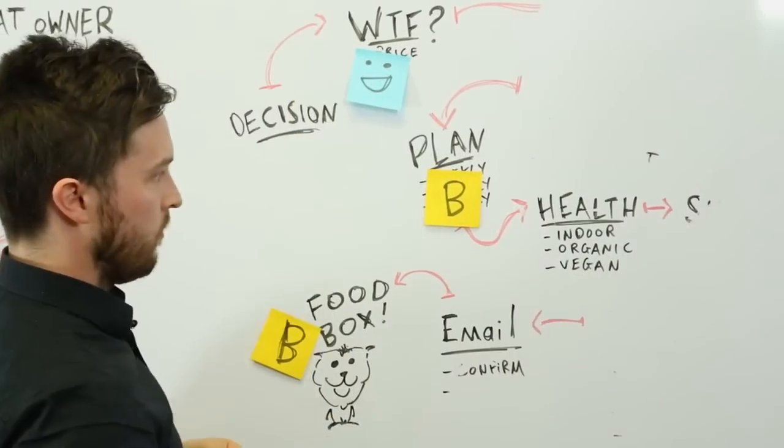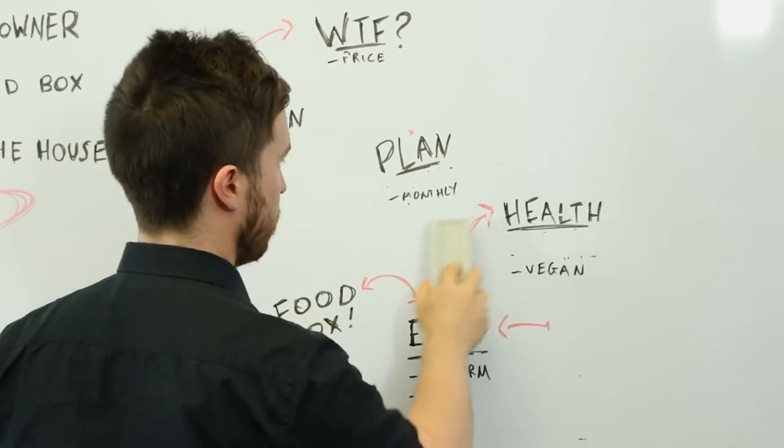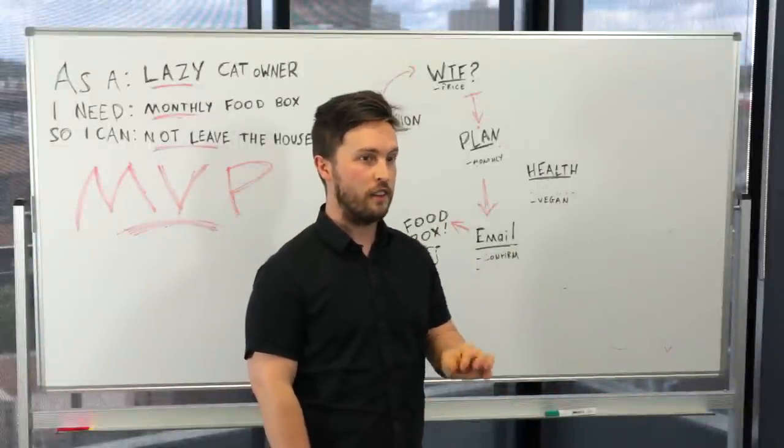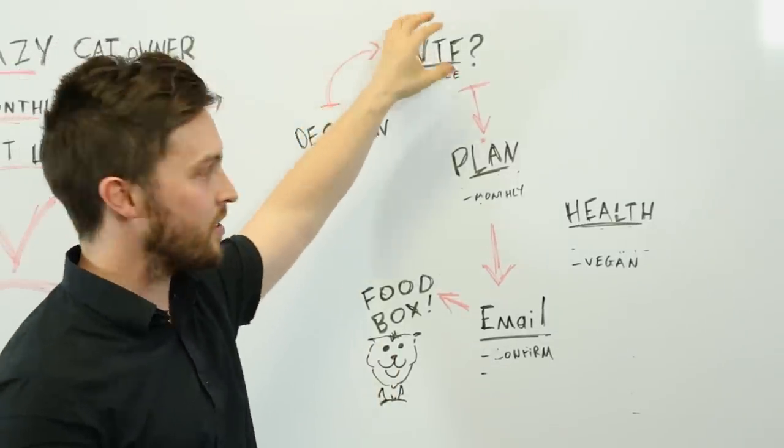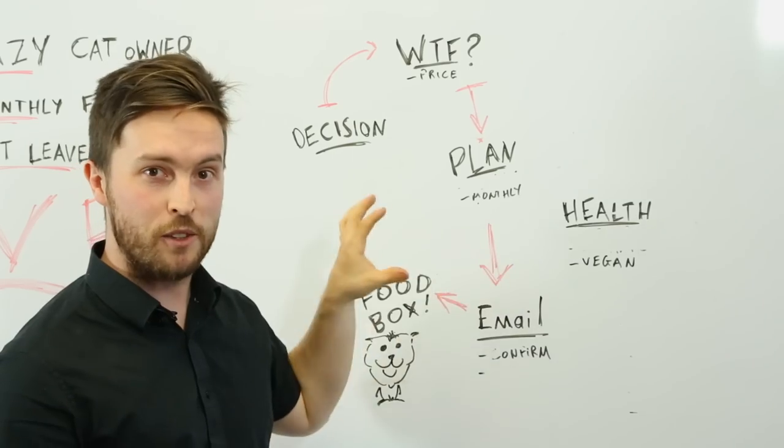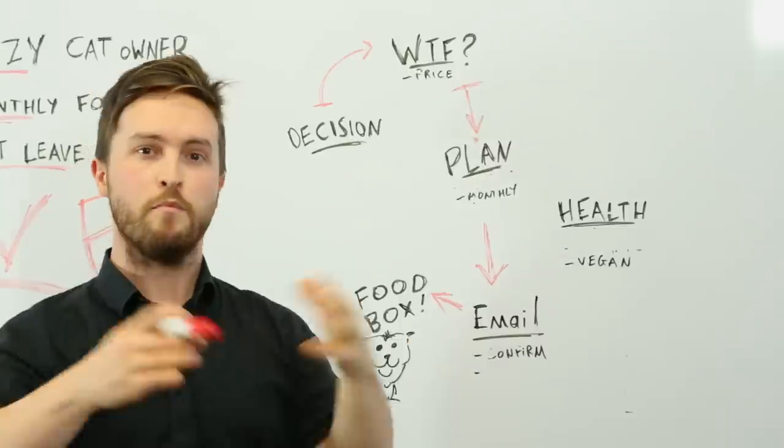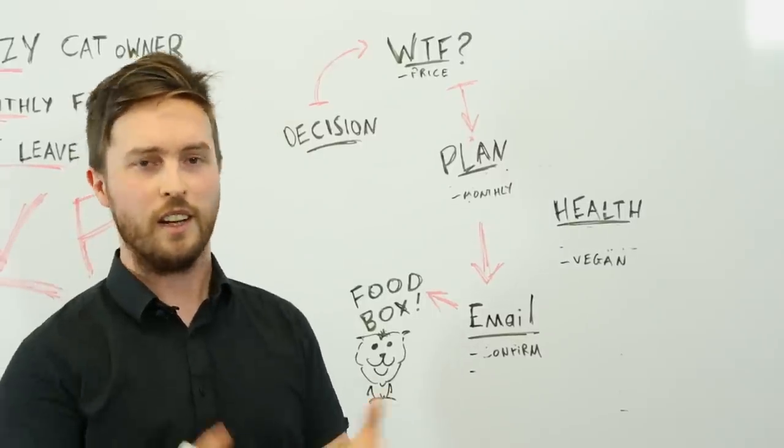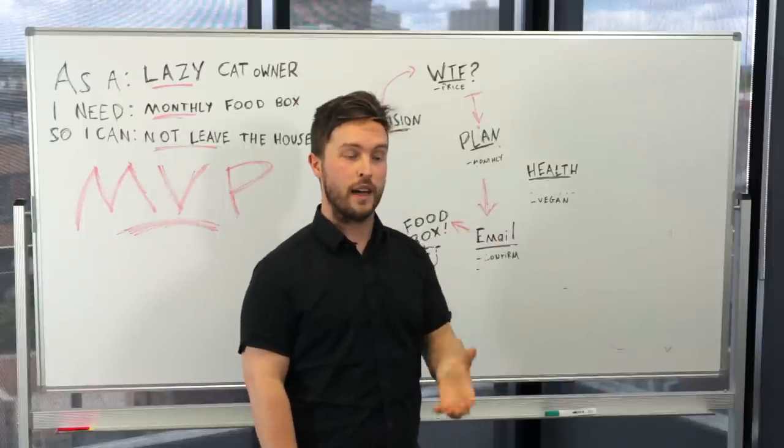So I've just rubbed out all of the fat in the idea. Only the things that are necessary for it to exist remain. You make a decision, you find out the price, there is only one plan which is monthly and it's only vegan cat food. You get one email to confirm that you get the product and then you get your food box and that's it. Whereas previously this big long complicated mess of stuff we had might be 30 or 40 or 50 interfaces that are with APIs to the GitHub login and all this other ridiculous stuff that nobody needs, we've done something that could probably be executed in a one-page site.